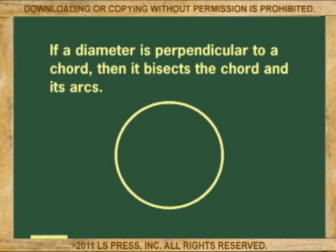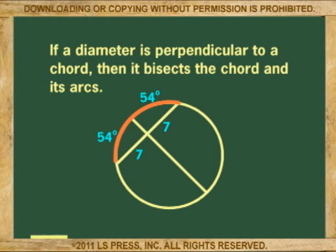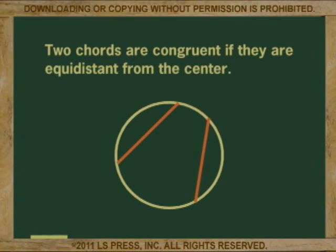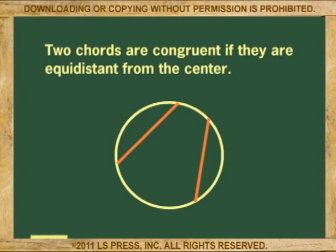If a diameter is perpendicular to a chord, then it bisects the chord and its arc. Two chords are congruent if they are equidistant from the center.